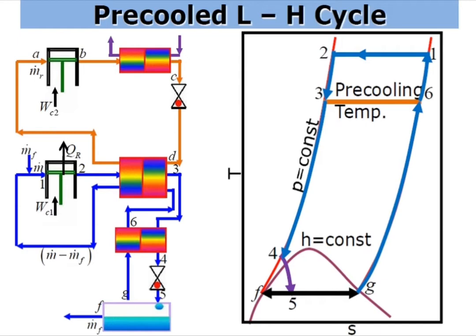Process 3 to 4 is again a constant pressure cooling process in the second heat exchanger used in the Linde-Hampson system. Process 4 to 5 is an isentropic expansion process. Then heat gain takes place while passing through process 5 to 6, and process 6 to 1 is reheating in a reheating heat exchanger. Then this cycle continues.